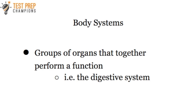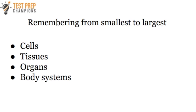For example, your digestive system. From smallest to largest, we have cells, tissues, organs, and body systems. But you might be wondering how you're going to remember these from smallest to largest.